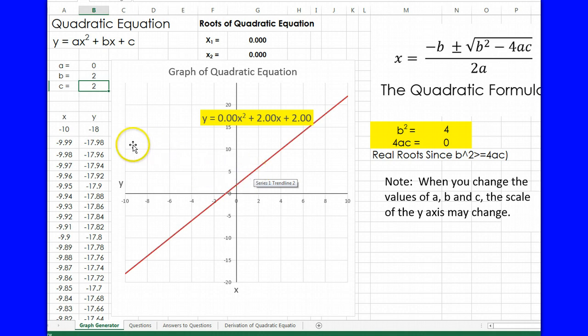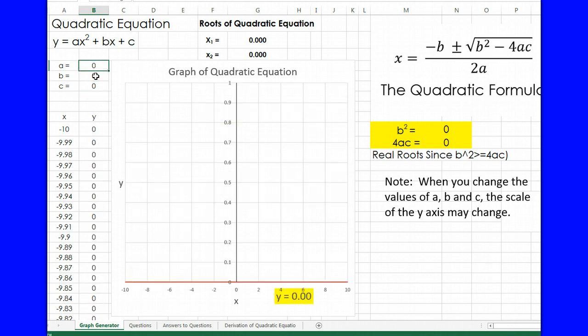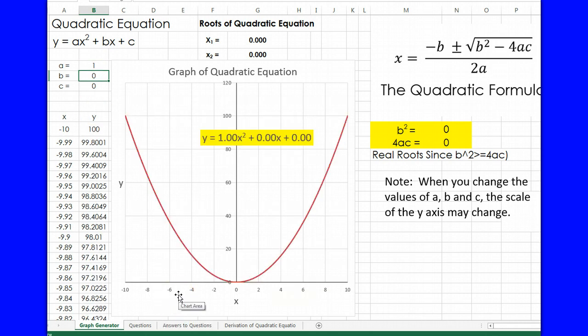All right, now I'm going to bring these values back to 0 and put a value for a of 1. Okay, now I get a quadratic—I get a parabolic curve, y equals x squared. It crosses the x-axis at 0. It's symmetric with respect to the y-axis.